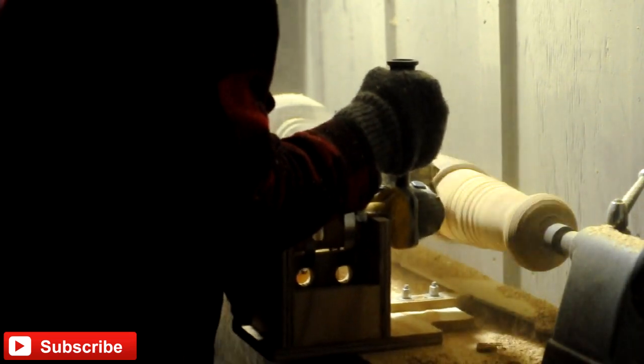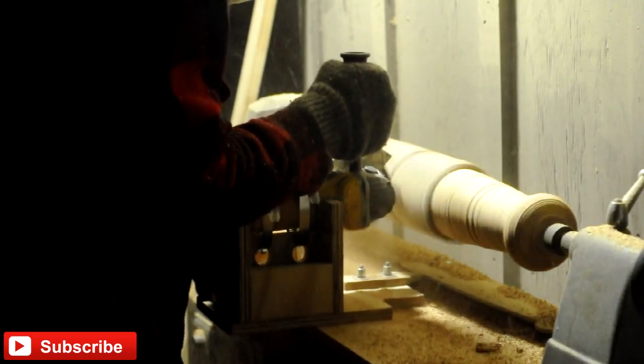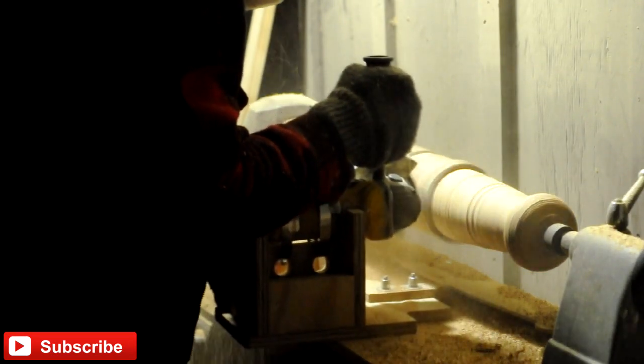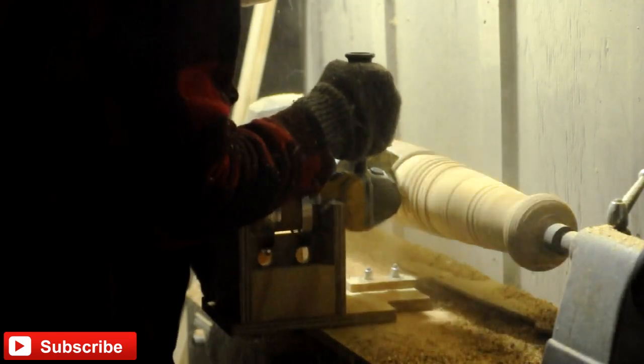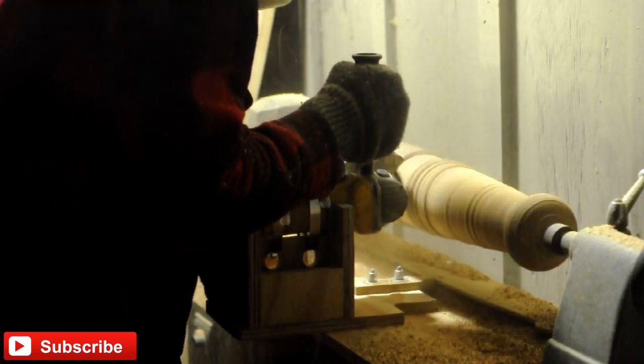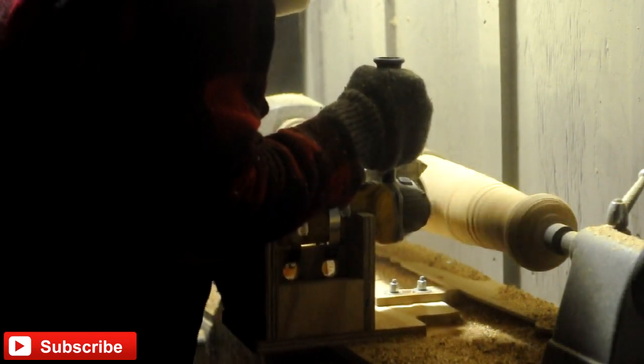But then what would happen is the grinder would be rotating up into it, and with the lathe spinning towards it, if it was ever to grab it would jerk the wheel into the piece of wood that I'm turning, which could cause some sort of dangerous situation or at least just hurt the piece of wood or jerk my jig out of alignment.